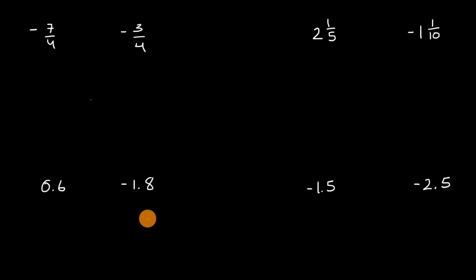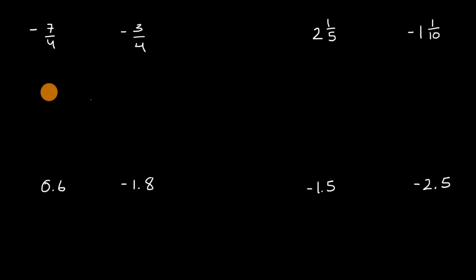All right, now let's do it together. So let's first compare negative 7 fourths to negative 3 fourths, and I'm going to try to do that by visualizing them on a number line.